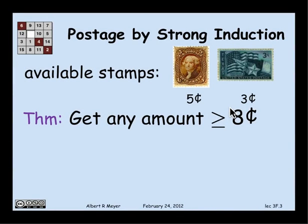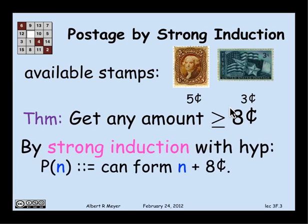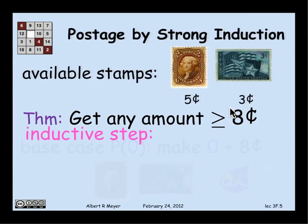All right. As an application of it, let's prove something that we've already proved by well-ordering. In fact, strong induction and well-ordering are closely related, as we'll also discuss later. So let's prove that using 3 and 5 cent stamps that you can get any amount of postage greater than or equal to 8 cents. And I'm going to prove this by strong induction with the induction hypothesis P of n that says I can form n plus 8 cents. Clearly, if I can prove for all n, P of n, then I've proved that I can get for every amount greater than or equal to 8 cents. And let's do the base case. Well, the base case is P of 0. Can I make 8 cents? Sure, 3 and 5. That's that one, and that's OK.